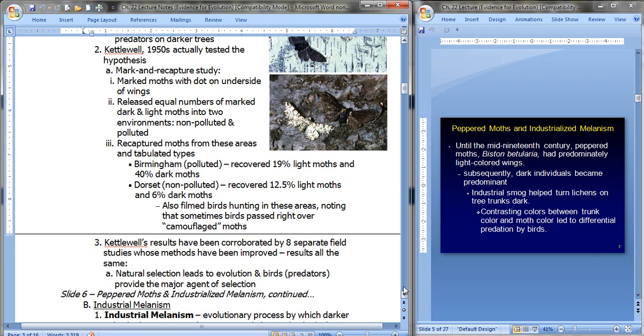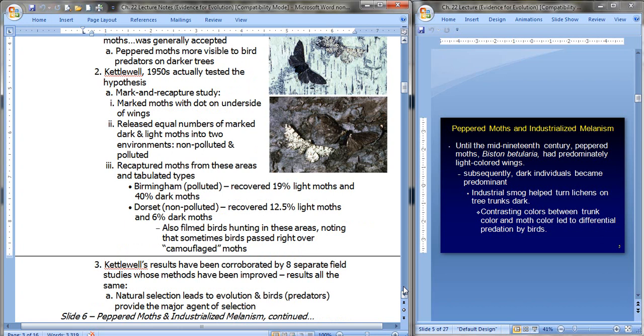Kettlewell's results have been corroborated by eight separate field studies whose methods have been improved. And the results are all the same. Corroborated basically means that they all found the same thing. Natural selection leads to evolution and birds, the predators, provide the major agent of selection. So they are the actual driving force, if you will. So Kettlewell, his study basically supported Tett's hypothesis back in 1896.